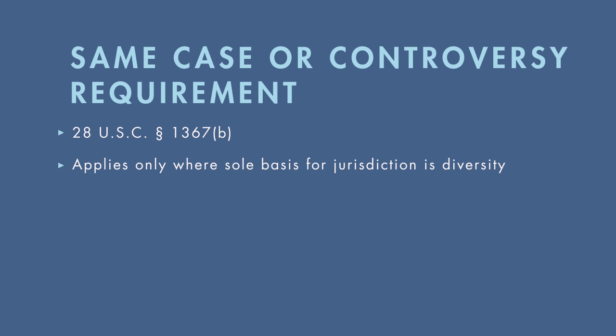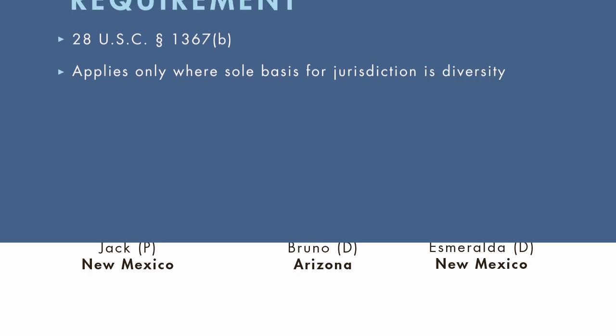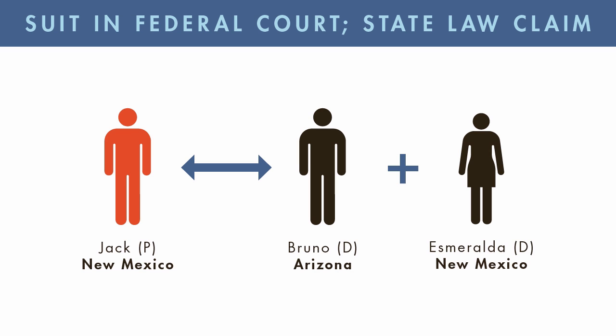It was basically designed to guard against the following scenario. Suppose that Jack, a citizen of New Mexico, wants to sue Bruno, a citizen of Arizona, and Esmeralda, a citizen of New Mexico, in federal court. Suppose that the basis of the lawsuit is the fact that Bruno and Esmeralda were both negligent in failing to clean up a spill at a restaurant where Jack ate and which they operated together, and their combined negligence caused Jack's injury. This is a purely state law claim that does not implicate federal law in any way. So the only possible basis for federal jurisdiction is diversity.